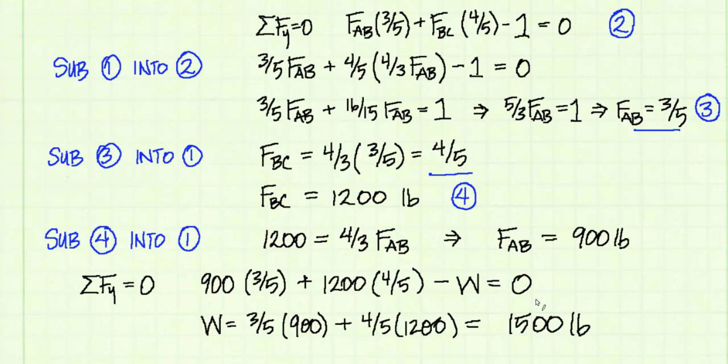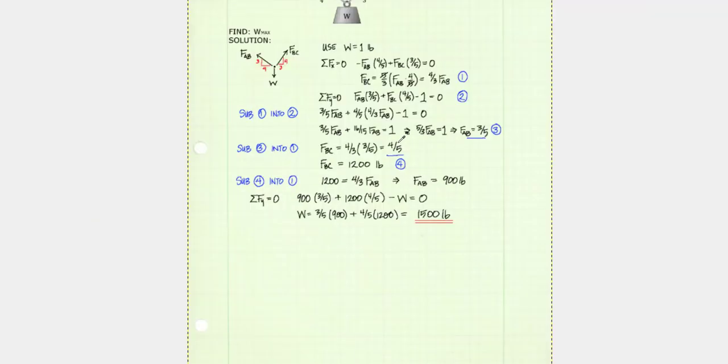Writing the equilibrium equation and solving for W, I get that our weight is equal to 1500 pounds. With a weight of 1500 pounds, cable BC will feel the 1200 pound force, and that is the limit we were given. And we're done.